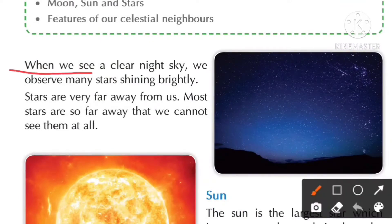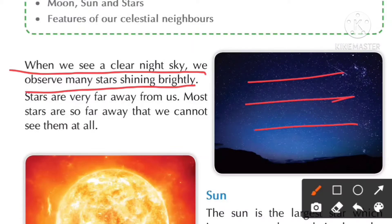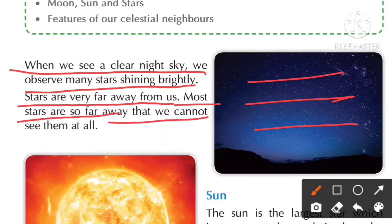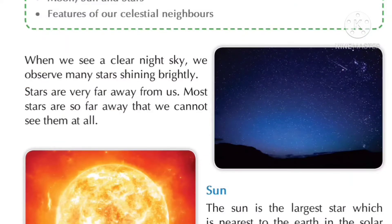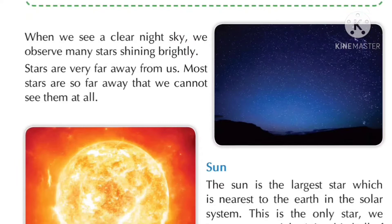When we see a clear night sky, we observe many stars shining brightly. You can see in this picture there are many stars shining in the sky. Stars are very far away from us — some stars are so far away that we cannot see them at all.